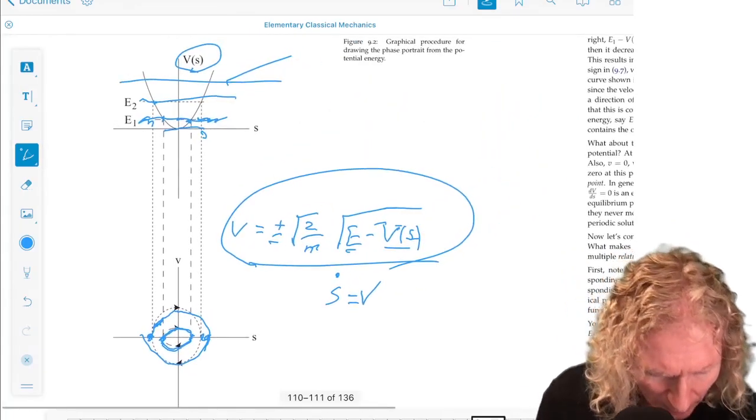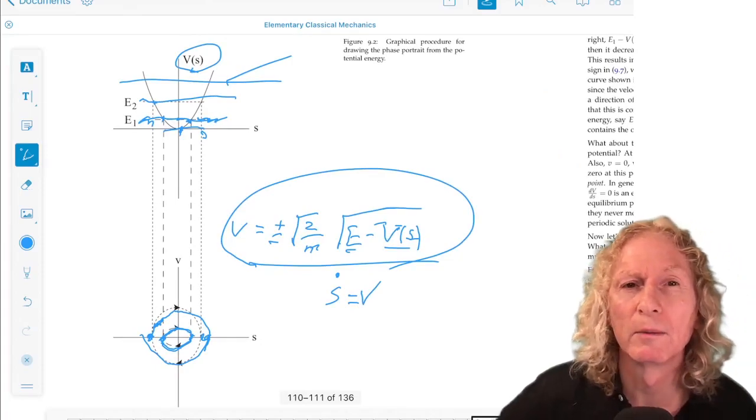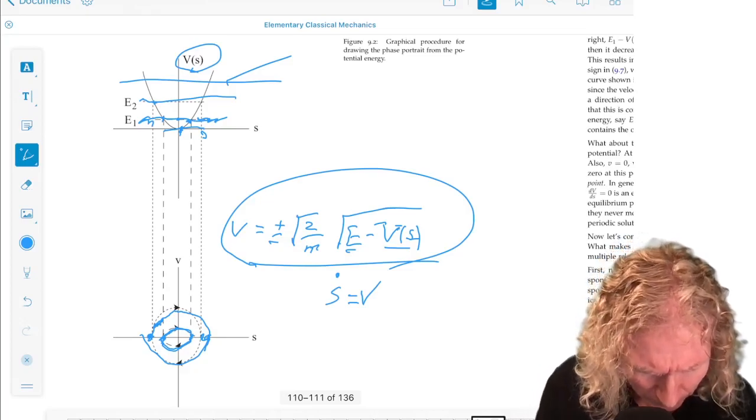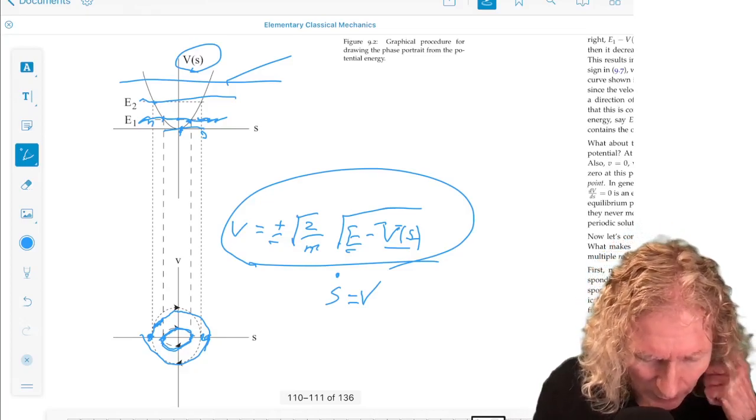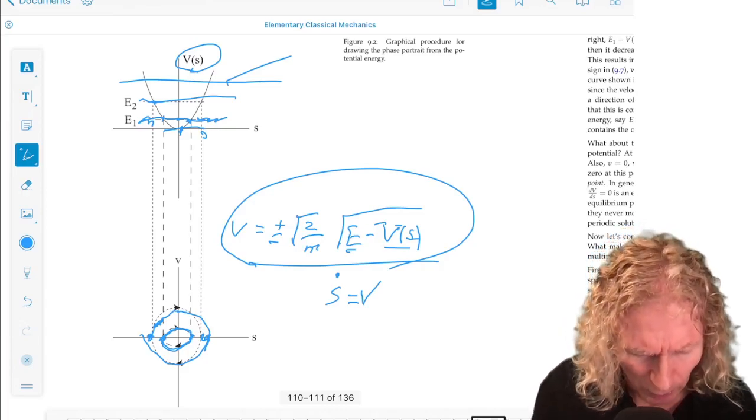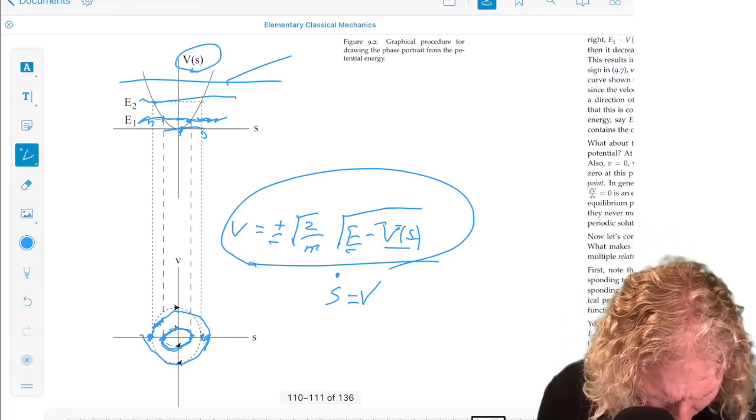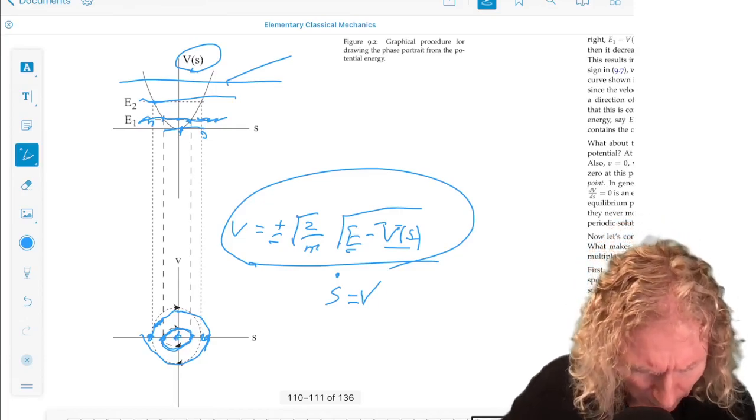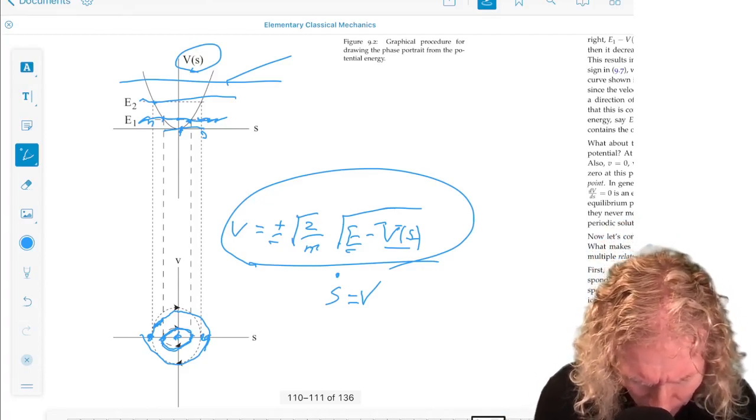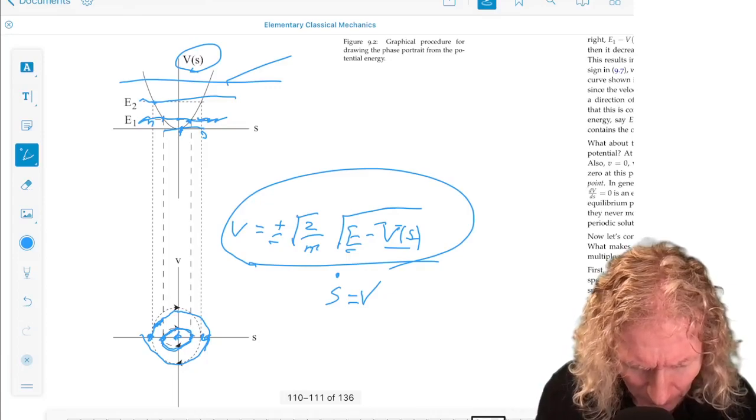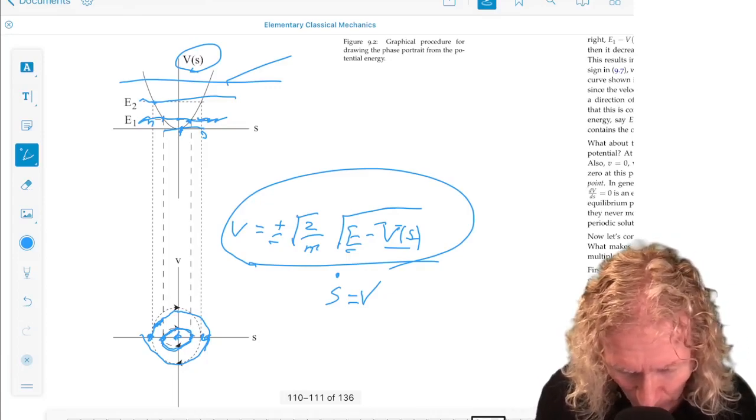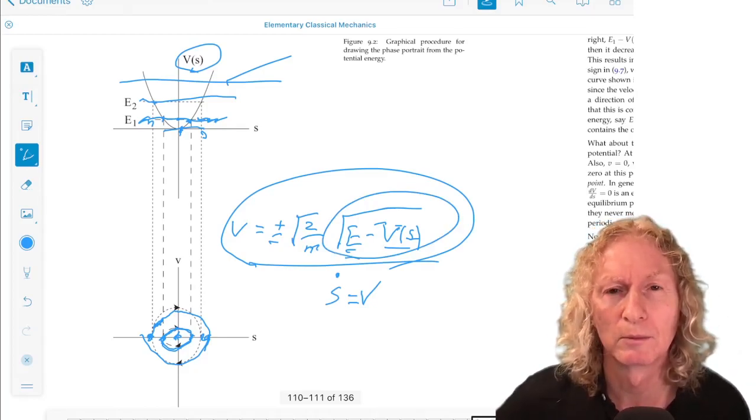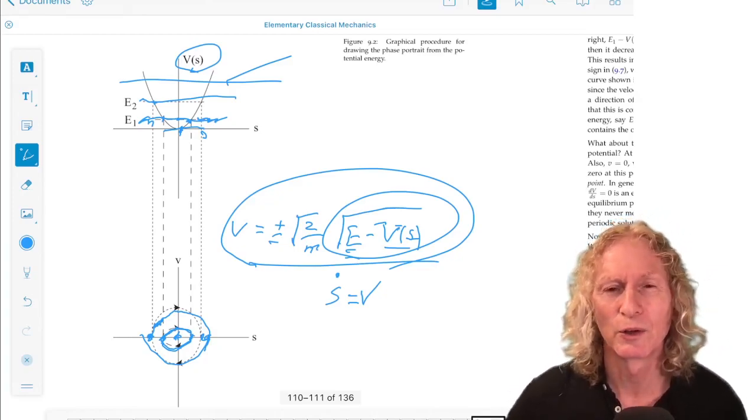Now, what if I went to the origin here, the minimum point? Well, at that minimum point, what is that? v prime of s is zero. You can verify from the equations that s dot and v dot do not change. And that point is a solution. It's an equilibrium solution. Because at s equals zero, there is no extent of motion for s. And so E equals V(s), E equals V(0). There's only one value of energy corresponding to the origin.